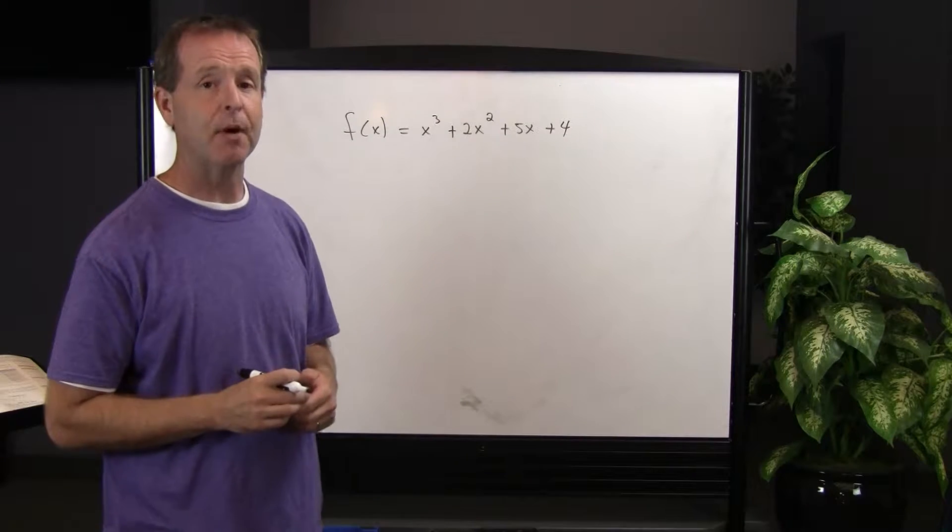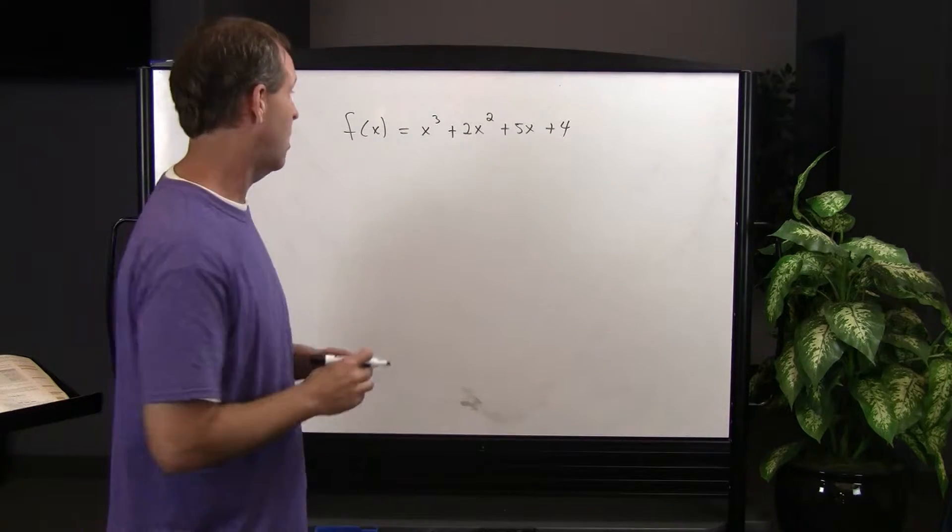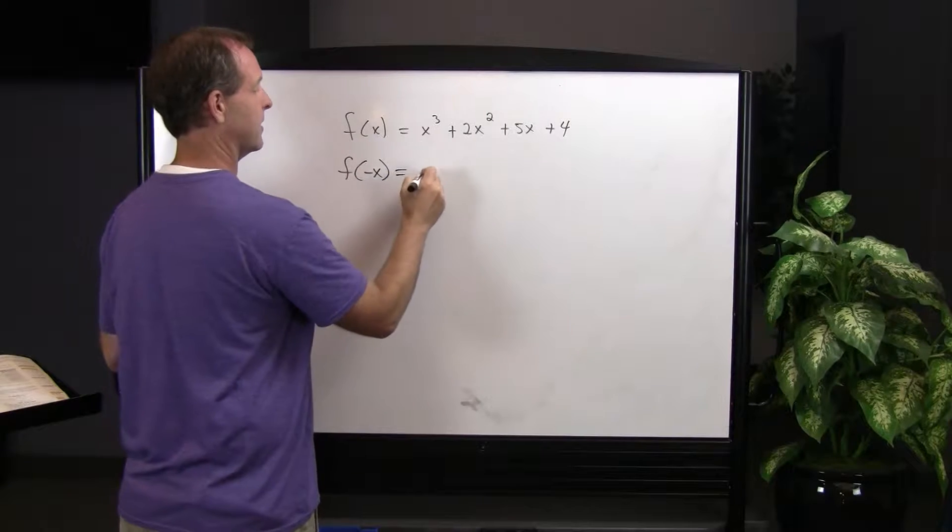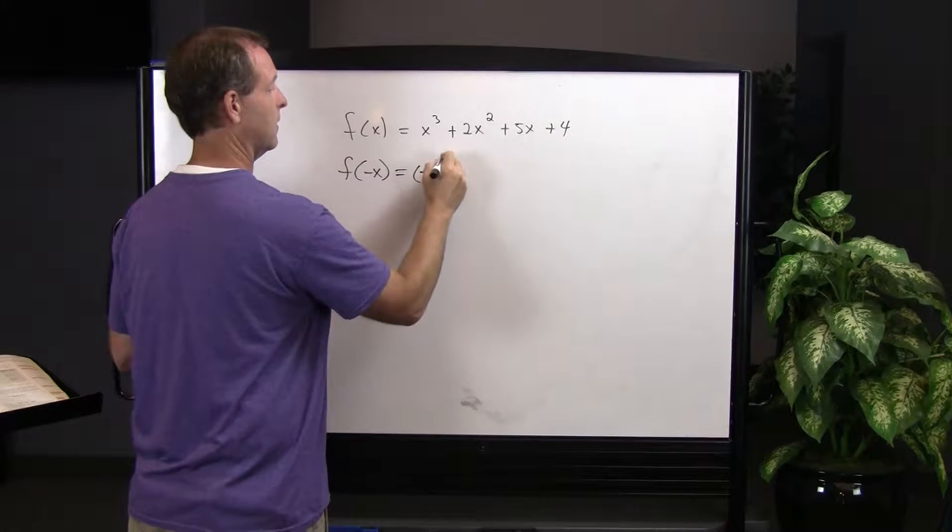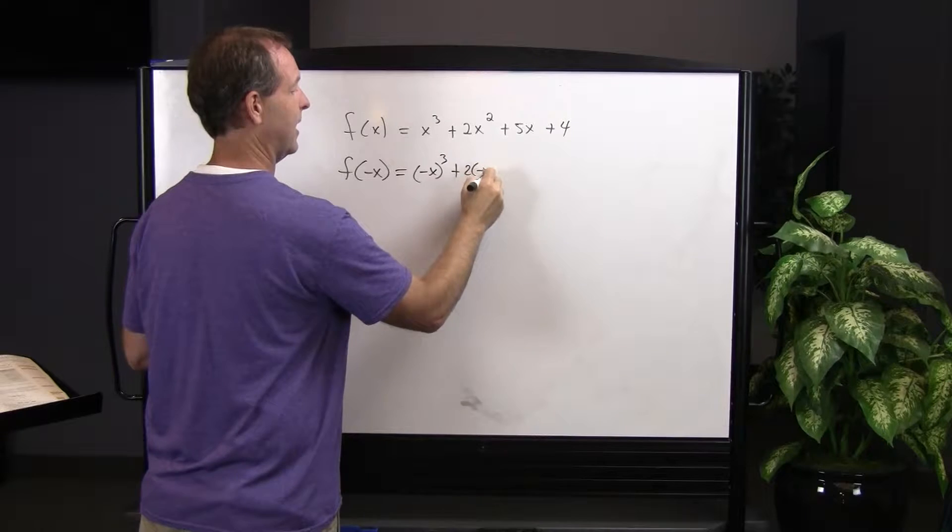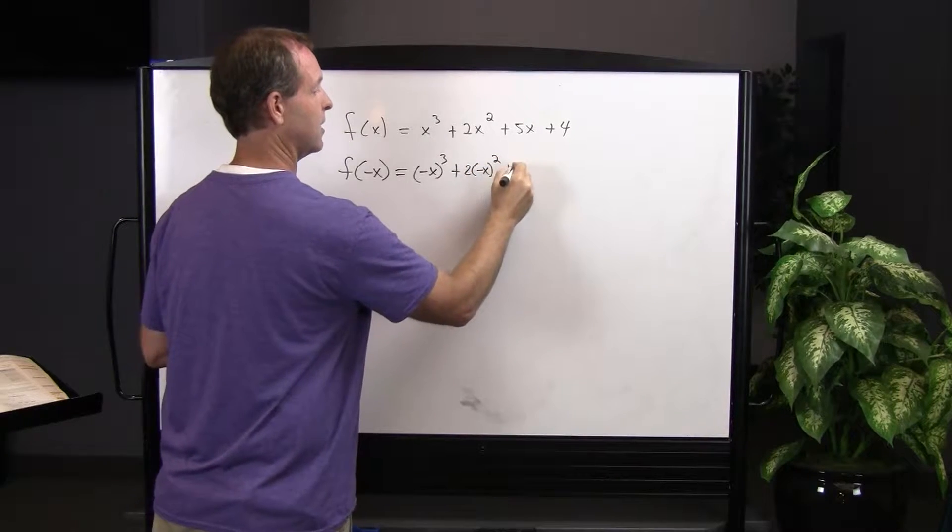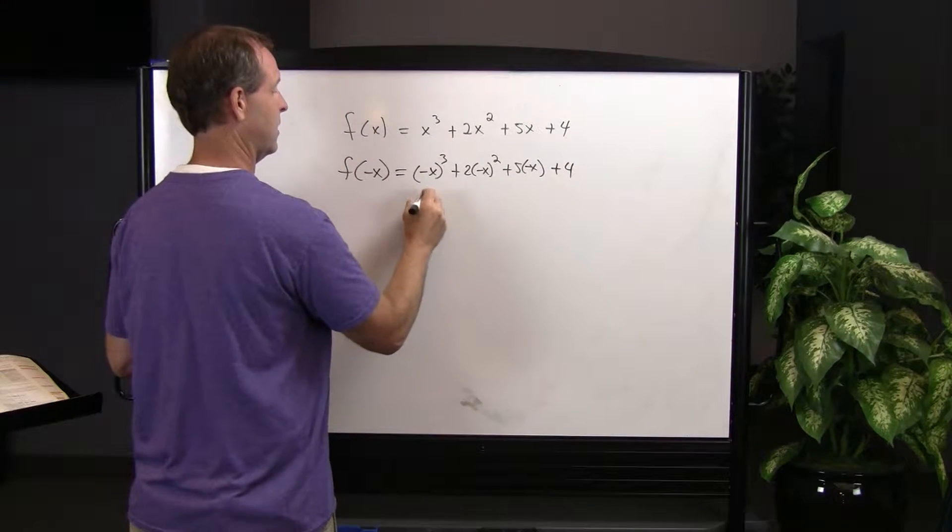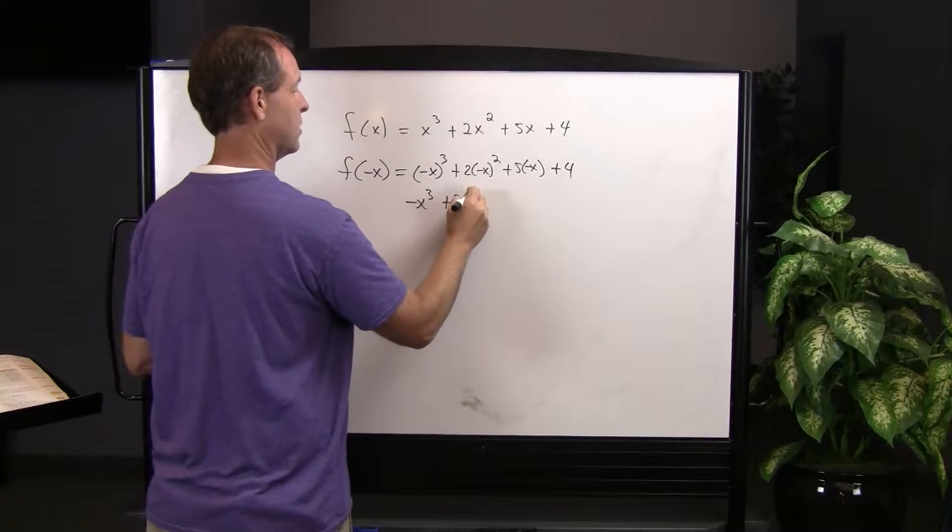In order to determine how many possible negative real zeroes there are, we evaluate it at negative x. So I have negative x cubed plus 2 times negative x squared plus 5 times negative x plus 4. Negative x cubed, positive 2x squared,